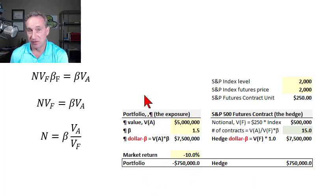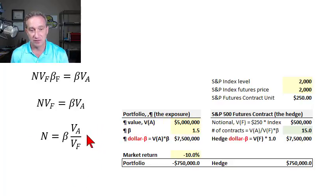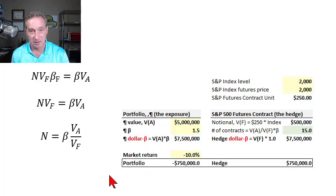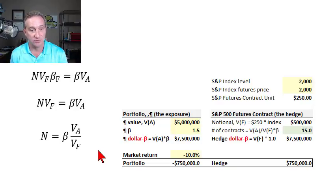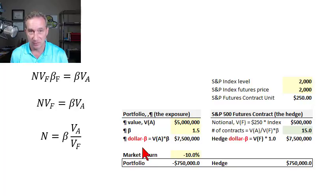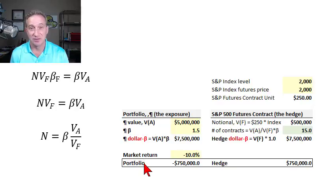One way to hedge a well-diversified equity portfolio is to reduce its beta or to neutralize its beta. I'd like to show in two steps — with a simple and then a more complicated example that follows — the intuition for how we determine the number of futures contracts that would reduce or neutralize the portfolio's beta. The key is to think about the dollar beta, which is the product of the portfolio's value and its beta.